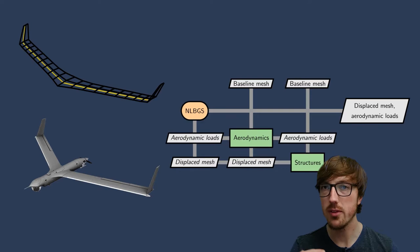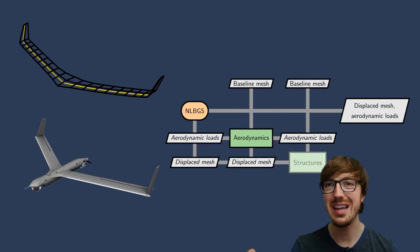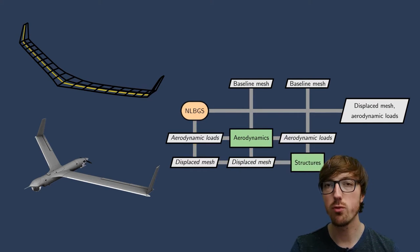Maybe the most straightforward or common one, if you come from the aircraft design side of things, is aerostructural wing coupling. So the aerodynamics feeds information to the structures and vice versa, creating an implicit relationship for the performance of the wing. But let's talk about another example.